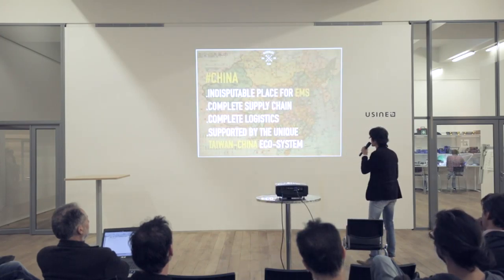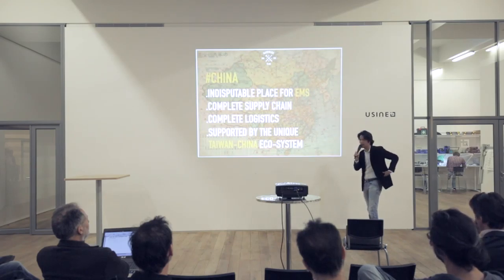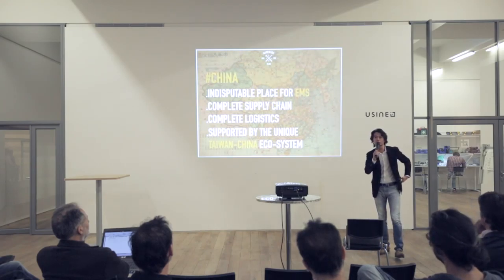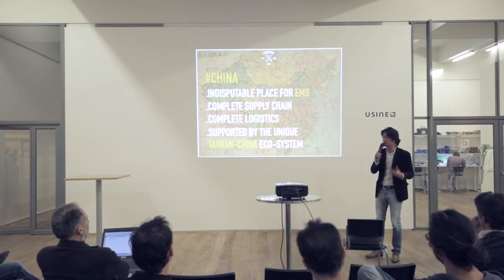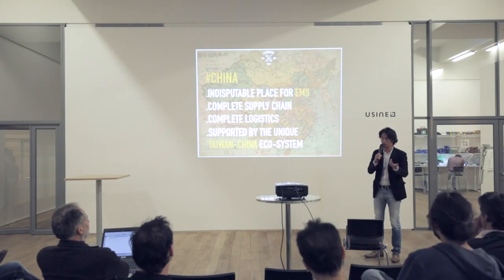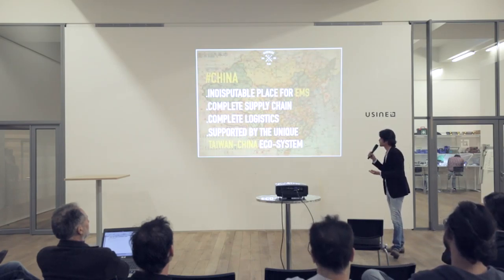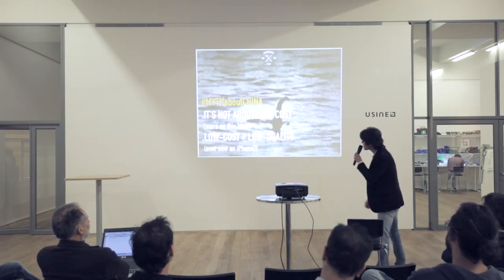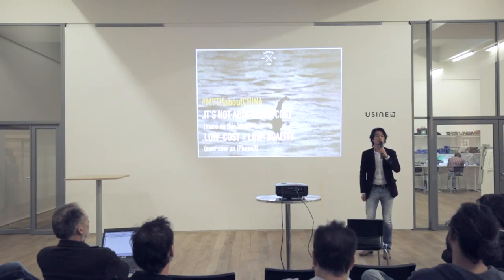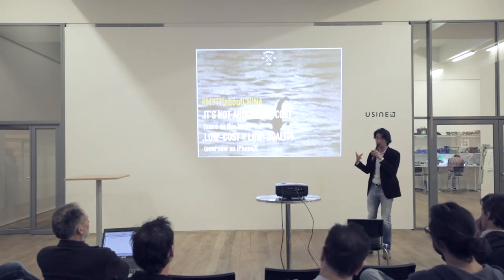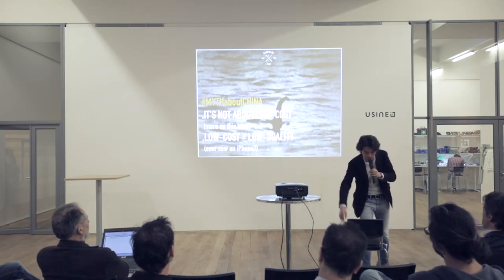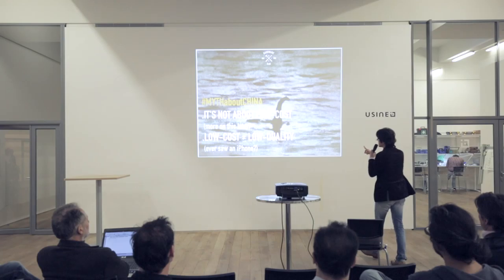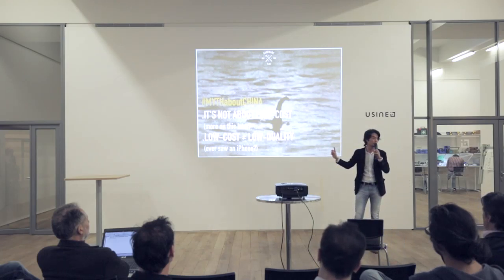China: if your goal is to become a dominant company in your field, it's indisputable that China is the place to be for contract manufacturing. It has the most complete supply chain and logistics, supported by the unique Taiwan-China ecosystem. It's not about low cost — it's about the completeness of the ecosystem. And low cost doesn't mean low quality; the iPhone is manufactured in China.